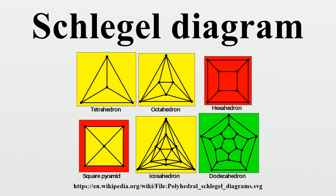If the polytope is convex, a point near the facet will exist which maps the facet outside and all other facets inside, so no edges need to cross in the projection.